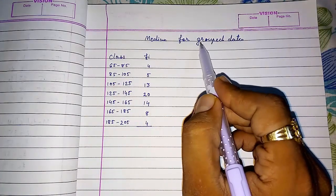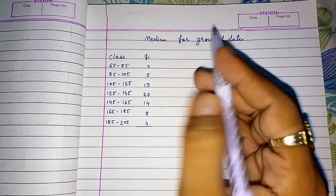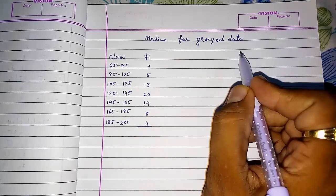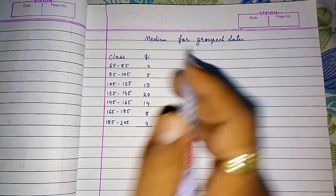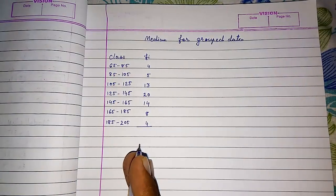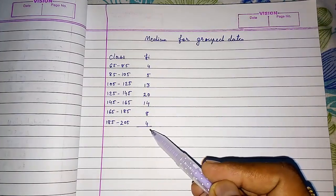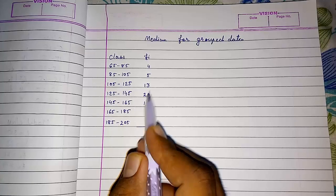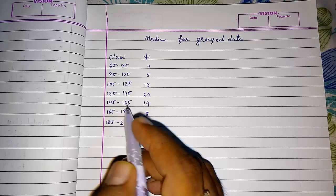Previously in lower classes we were finding median for ungrouped data. At that time we were arranging the data in ascending order and finding the middle number. Here we have to do the same - arrange the frequency in ascending order and find the median class. We will not get the median directly but we will get a median class.